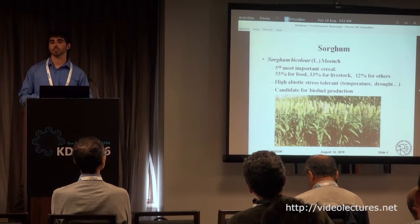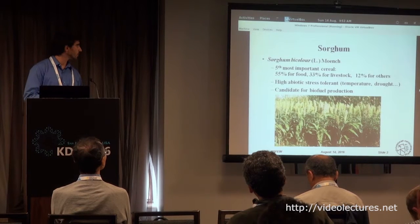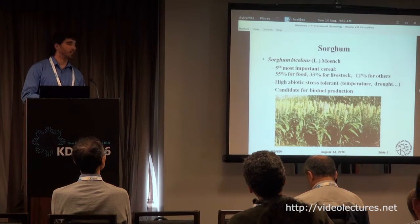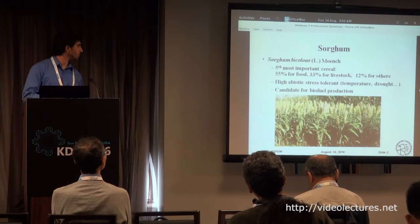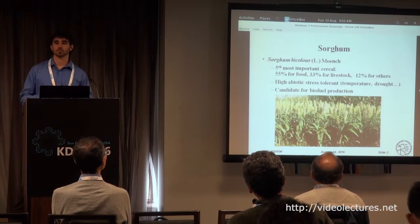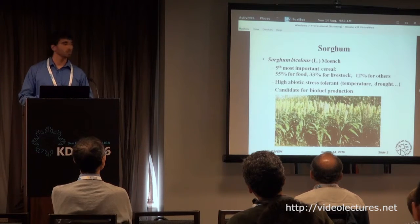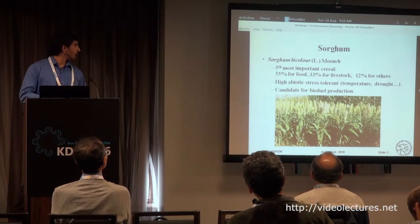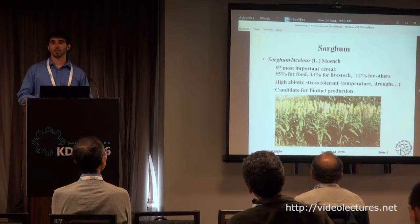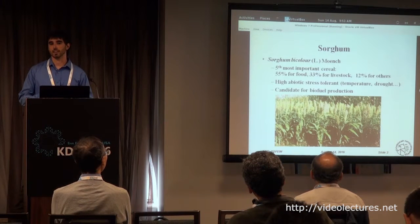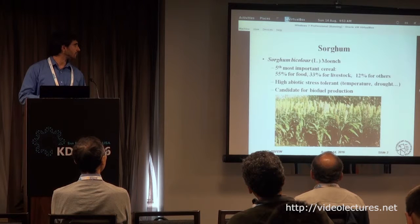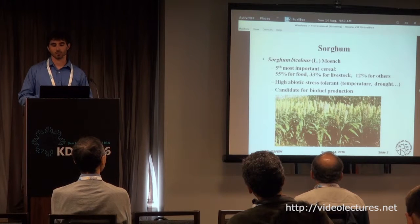The plant that we phenotype is sorghum, which you may not be aware is the fifth most important cereal. Although it's used mainly for food, it's a good candidate for biofuel production because it's considered a plant very tolerant to temperature and drought stress.